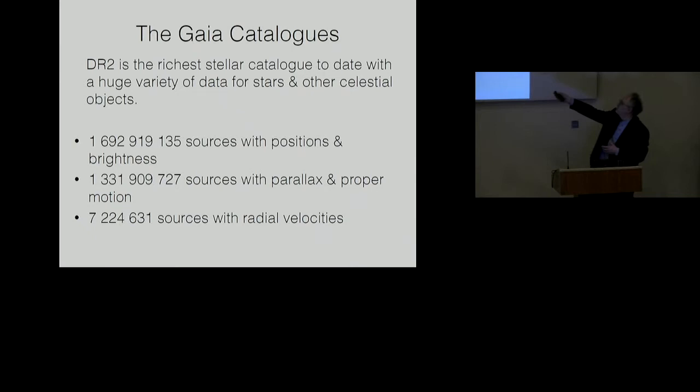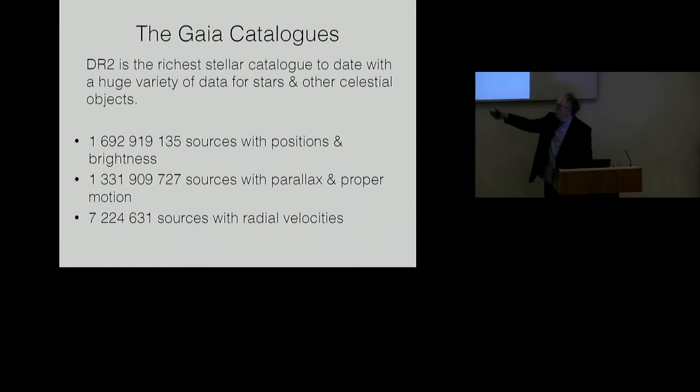That data release is the richest stellar catalogue to date, and it contains a huge variety of data for stars, particularly stars in our galaxy, and other celestial objects. In raw numbers, there are over a billion sources with positions and brightnesses, over a billion sources with parallaxes or distances and proper motions or transverse velocities on the sky. Because the radial velocity spectrometer has a brighter limiting magnitude, there are less sources with radial velocities, only of the order of seven million or so.